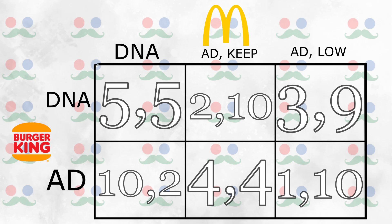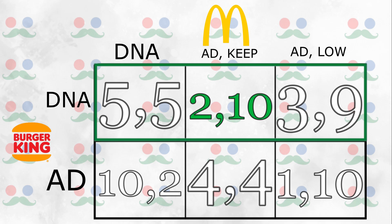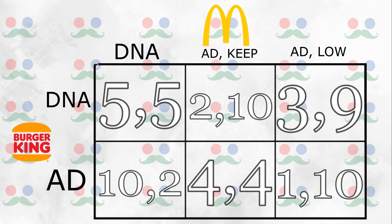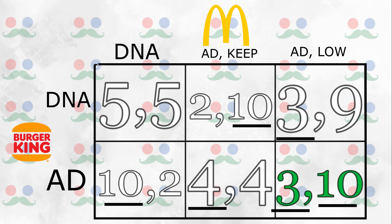From McDonald's perspective of Burger King's two options: if Burger King chooses to do nothing, McDonald's will advertise and keep prices the same to maximize profits. However, if Burger King does advertise, McDonald's will advertise and lower their prices for the highest possible payoff. We can see from this payoff matrix that there is no equilibrium, because not one square has both selections underlined. But if we assume Burger King is indifferent when McDonald's lowers prices and advertises, we get an equilibrium: Burger King advertises and McDonald's advertises and lowers prices.